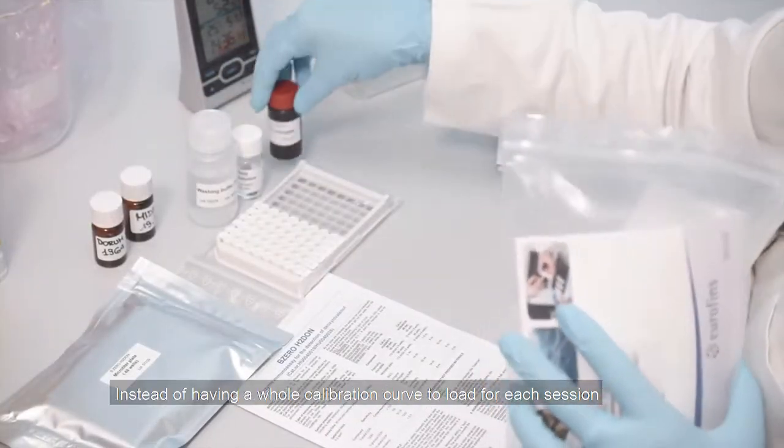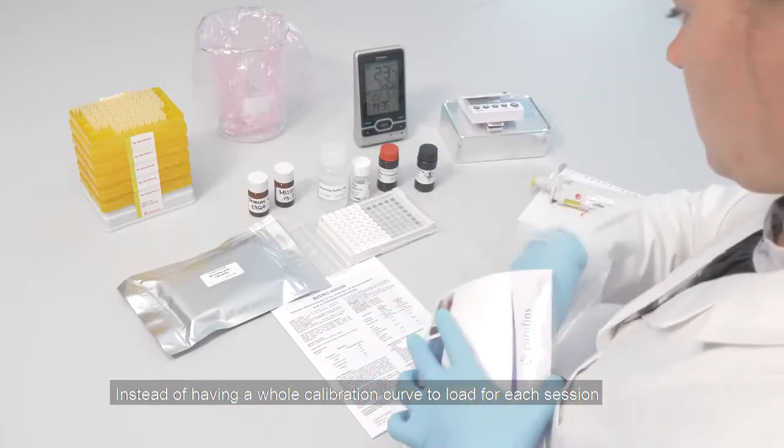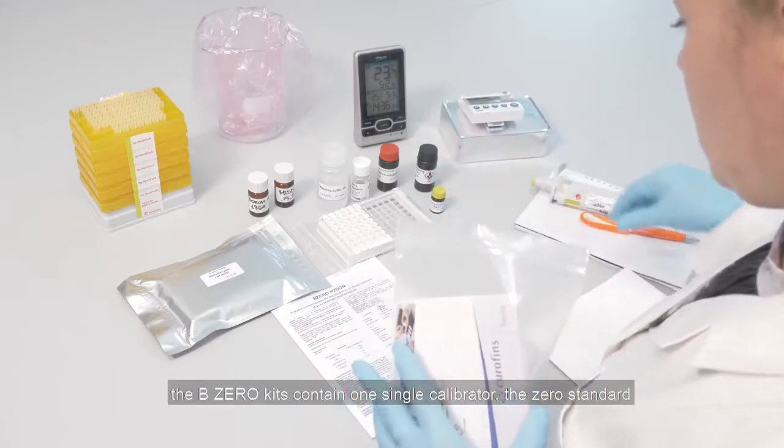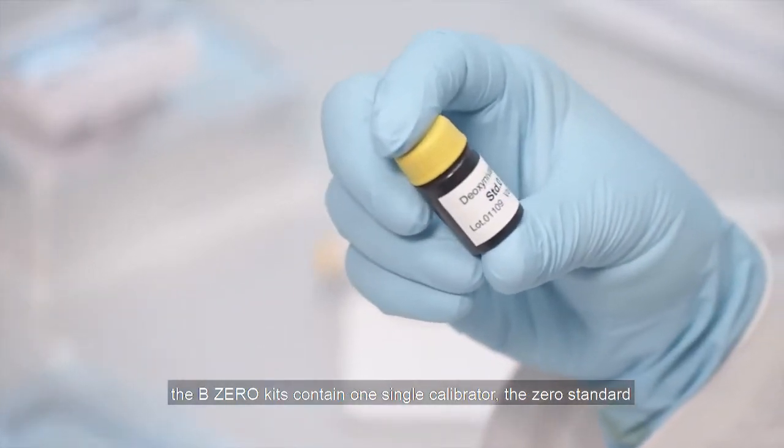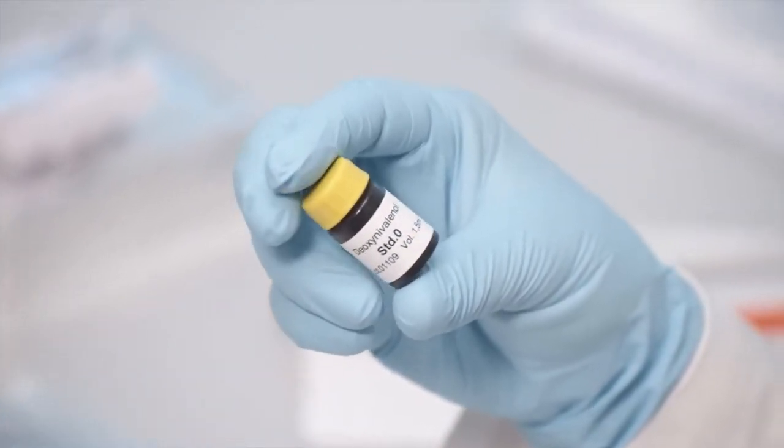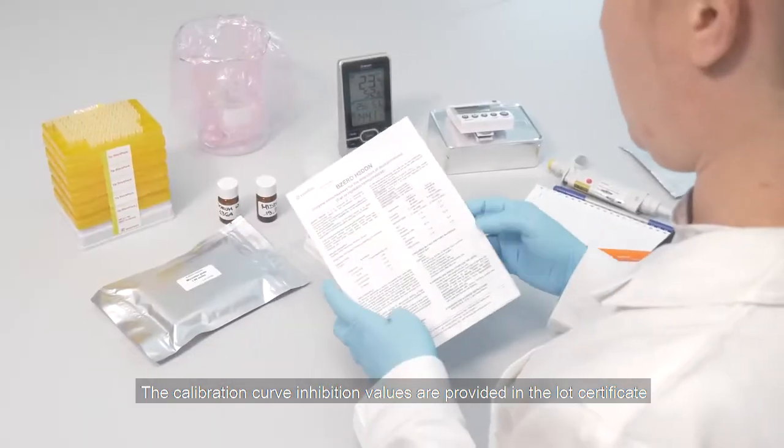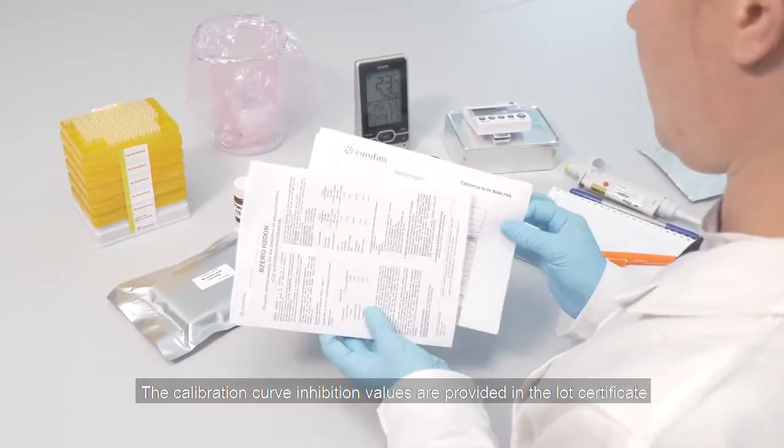Instead of having a whole calibration curve to load for each session, the B0 kits contain one single calibrator, the zero standard. The calibration curve inhibition values are provided in the lot certificate.